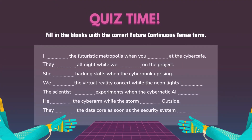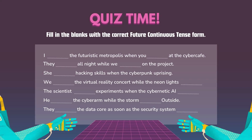Quiz time! Fill in the blanks with the correct Future Continuous Tense form. I ___ the futuristic metropolis when you ___ at the cyber cafe. They ___ all night while we ___ on the project. She ___ hacking skills when the cyberpunk uprising ___. We ___ the virtual reality concert while the neon lights ___. The scientist ___ experiments when the cybernetic AI ___. He ___ the cyberarm while the storm ___ outside. They ___ the data core as soon as the security system ___.